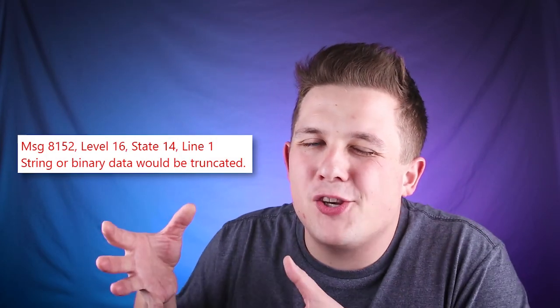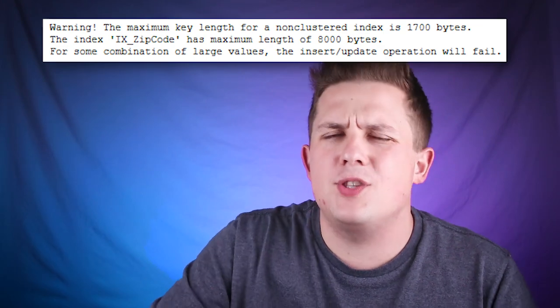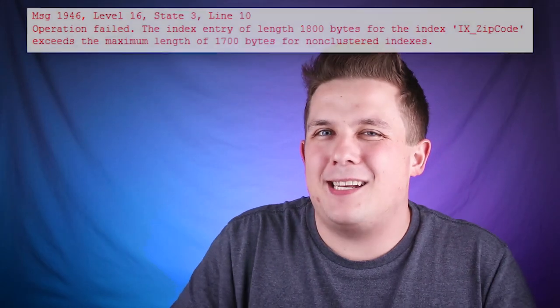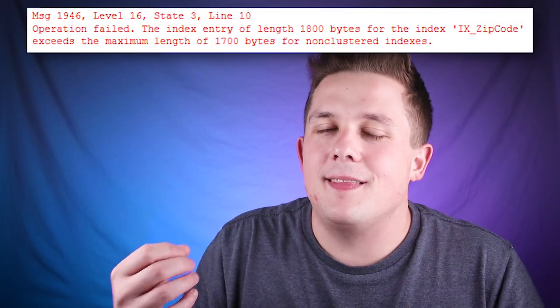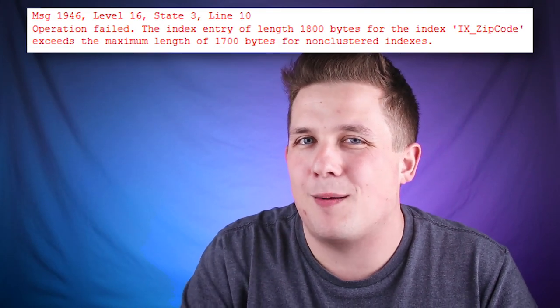If instead we had our zip code field limited to 10, we could potentially alleviate some of those problems because the insert would fail and we would avoid having that dirty data enter our database. Reason number three is because of indexing. Have you ever tried to index a column that's more than 1700 bytes, or 900 bytes depending on which version of SQL Server you're using? If you have, you're probably familiar with the warning message saying you can't create an index key of more than 1700 bytes. While SQL Server will technically still allow you to create that index, as soon as you try to insert data into that varchar 8000 field that is longer than 1700 bytes, that insert will fail and you'll get an ugly error message from SQL Server.